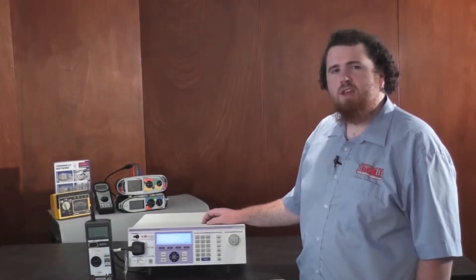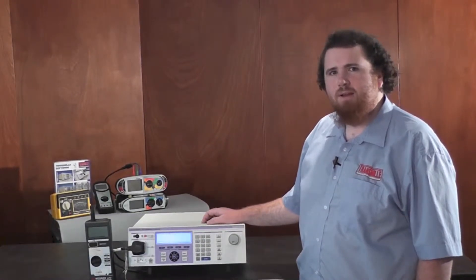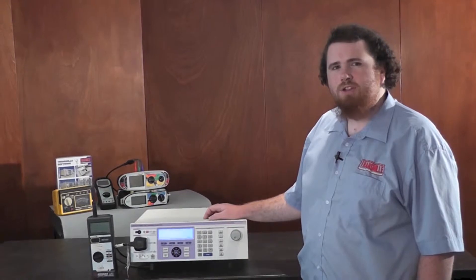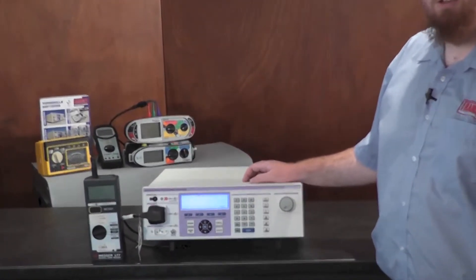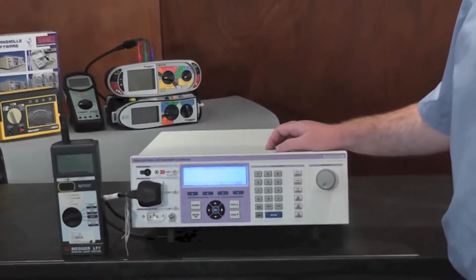Calibrating a loop tester with the 3200A is easy, especially with the auto loop function that automatically adds the loop resistance to the value indicated on the 3200A.